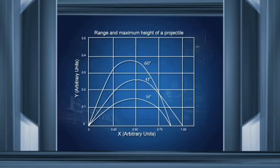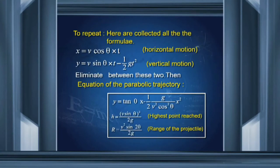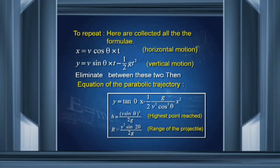I have drawn graphs for projectiles launched at 30 degrees, 45 degrees, and 60 degrees, and you can see the projectile at 45 degrees has the maximum range. To summarize: horizontal distance is v cos theta times t; vertical distance is v sin theta times t minus half g t squared; the equation of the path is y equal to x tan theta minus half g x squared divided by v squared cos squared theta — a parabola. Maximum height is v squared sin squared theta divided by 2g, and range is v squared sin 2 theta divided by 2g.